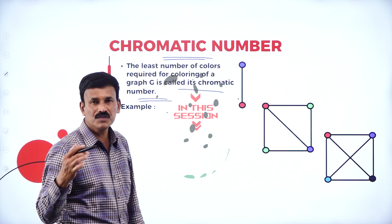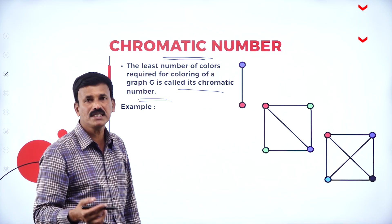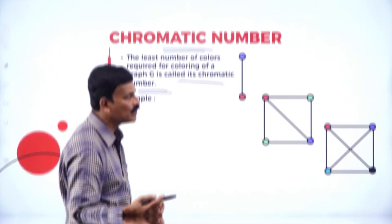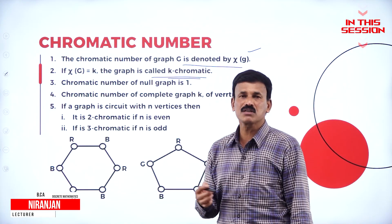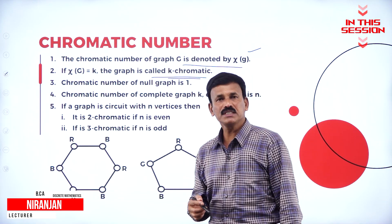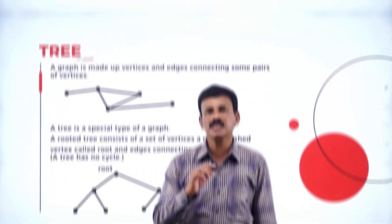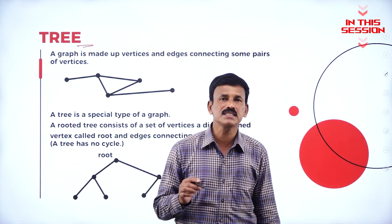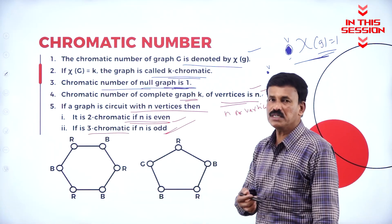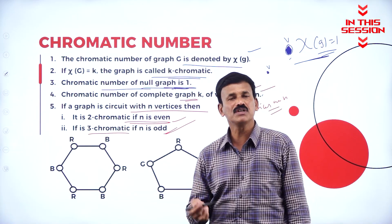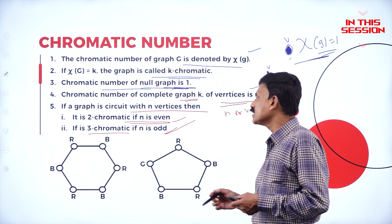The least number of colors which are required to color a graph is called the chromatic number of a given graph. If the chromatic number is 2, for example, then it is called 2-chromatic. If the chromatic number is 3 or 4, it is called 3-chromatic or 4-chromatic graph. The edges of the tree are called branches and the elements of the tree are called nodes. Depending upon odd or even number, we write it as even chromatic or odd chromatic.